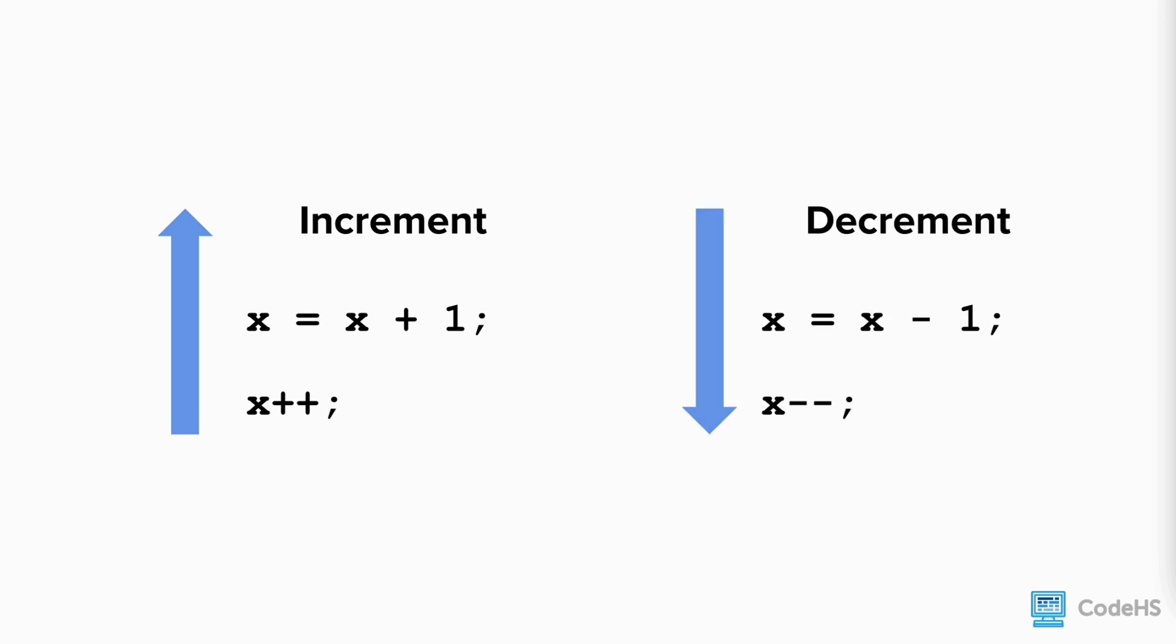To decrement means to decrease the value of the variable by 1. To do this, we can reassign the variable to itself minus 1, or we can take a shortcut and write the name of the variable followed by 2 minus signs.